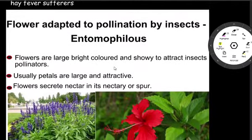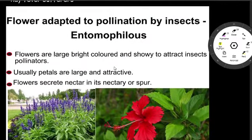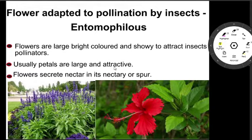Now we will discuss about flowers adapted to pollination by insects — entomophilies. Flowers are large, bright-colored, and showy to attract insect pollinators. Usually petals are large and attractive so that insects are drawn to visit. Flowers secrete nectar in their nectary so that they will reward the insects.